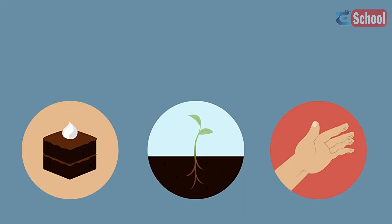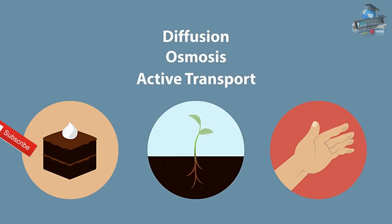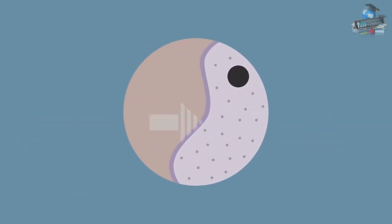All of these things require the movement of substances by either diffusion, osmosis, or active transport. In this two-part series we're going to discover how cells take in useful substances and remove waste using these three methods of transport.